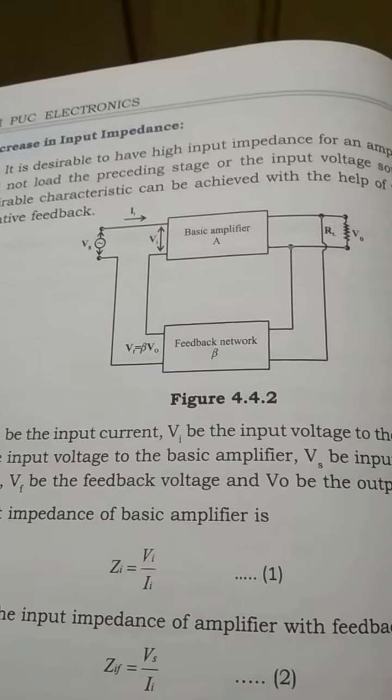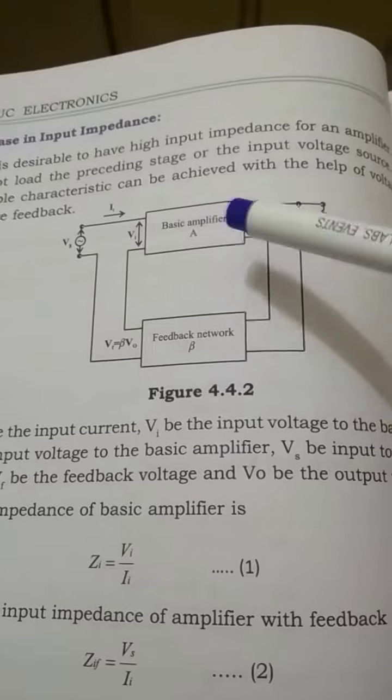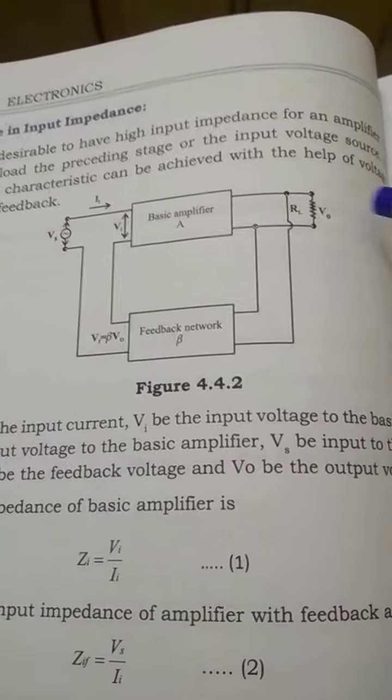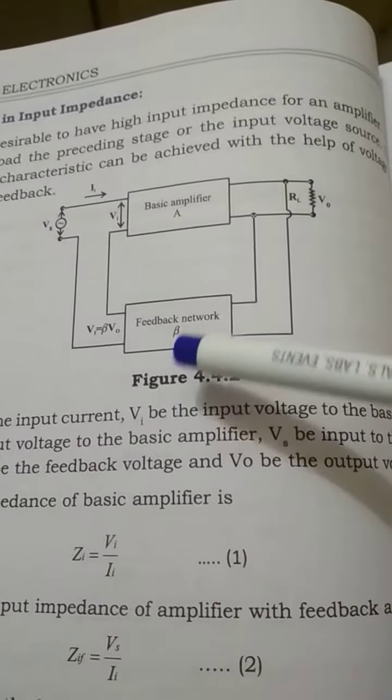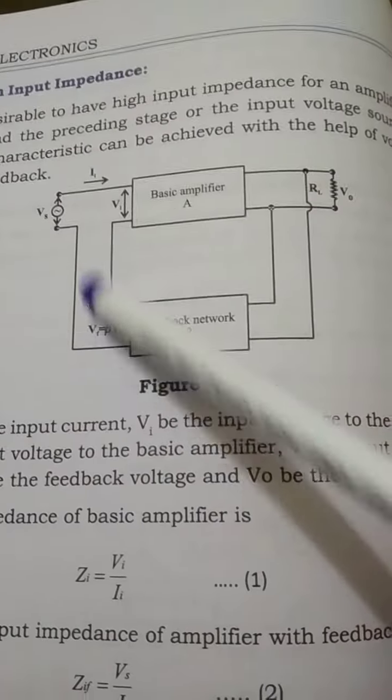In this video, I will derive the input impedance for the amplifier with feedback. This is the basic amplifier with output voltage V0, feedback network with beta, and Vf equals beta times V0.